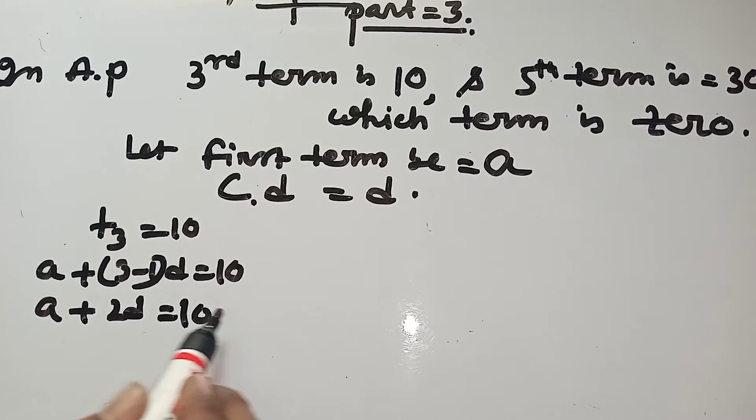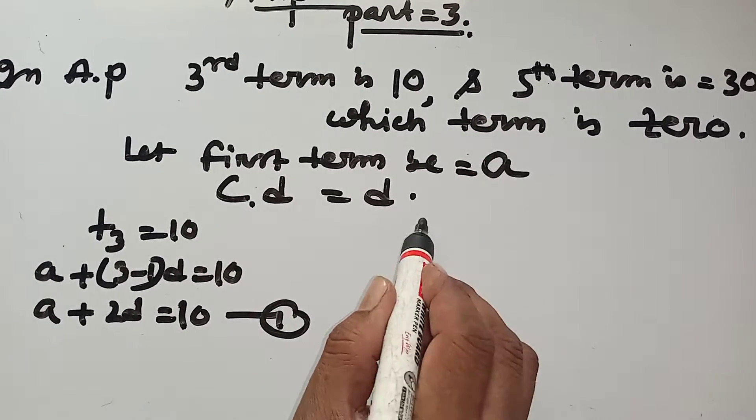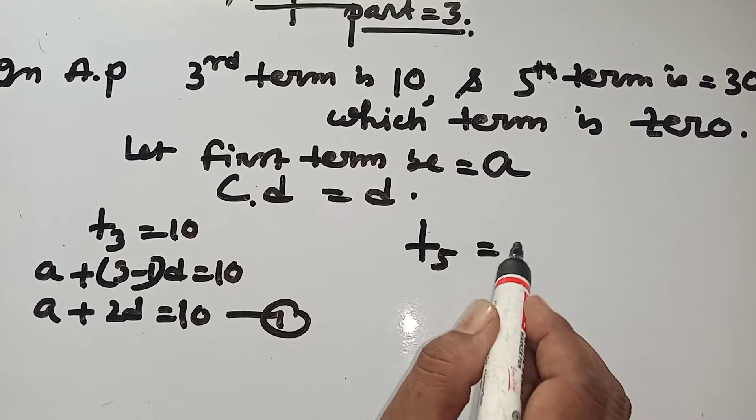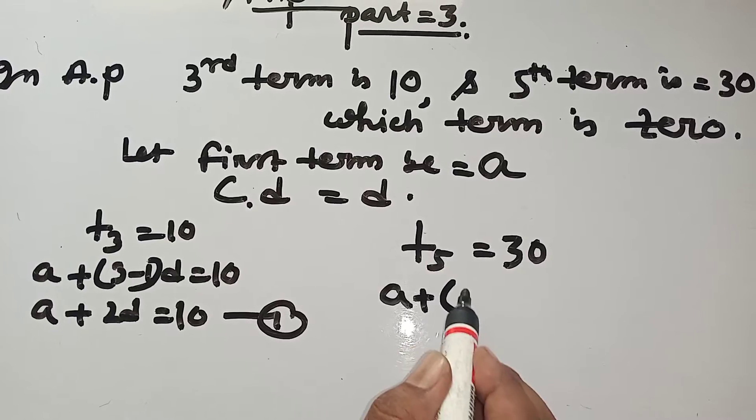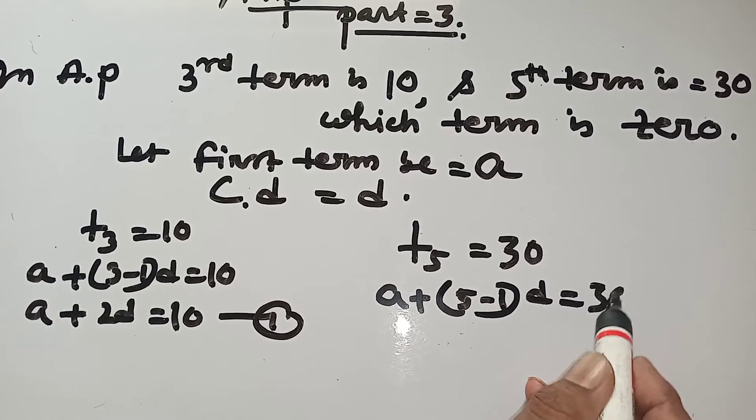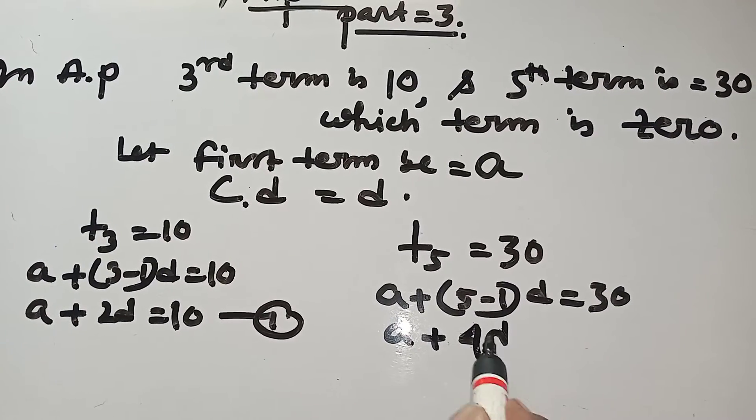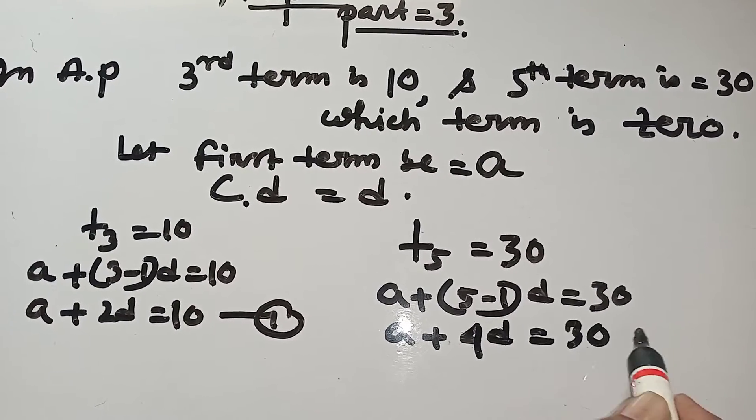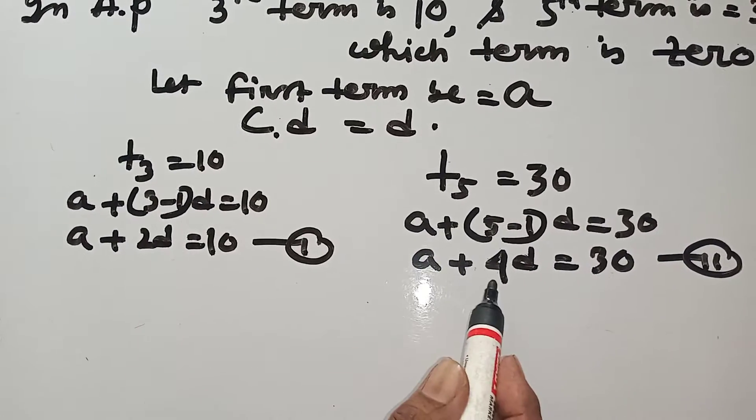This is equation 1. Next, T5 equal to 30. A plus 5 minus 1 into D equal to 30, A plus 4D equal to 30. This is equation 2. Now solve these equations.